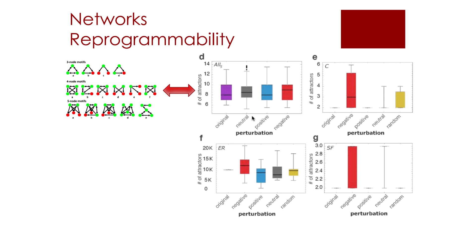What we found was something we were expecting and that can turn out to be of extreme help: moving systems on the algorithmic complexity landscape has a predictive power and effect on the dynamical landscape of the system, that is, in the phase space of the dynamical system.